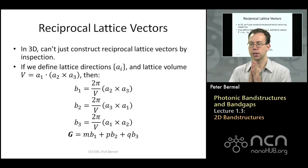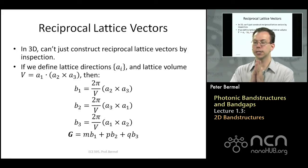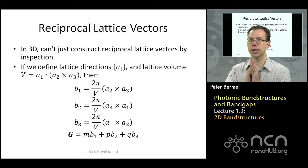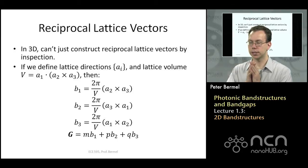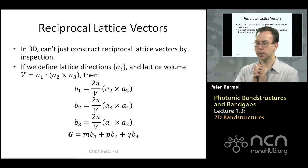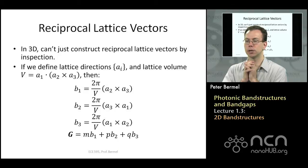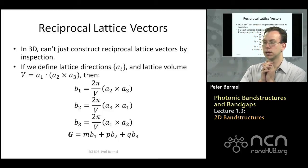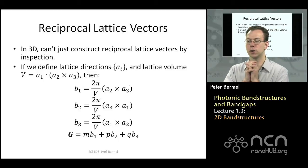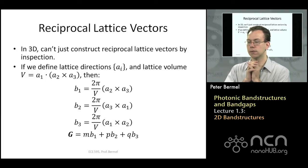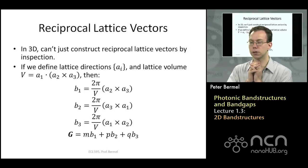In 3D, we can't always just guess what the reciprocal lattice vectors will be, so we have a set of relationships to construct them from the lattice directions. We write down the 3 key lattice directions in real space — a1, a2, a3 — and define the lattice volume as the triple product a1 · (a2 × a3). That allows us to derive the 3 reciprocal directions b1, b2, b3, which in turn give rise to the overall set of reciprocal lattice vectors as linear sums of integer multiples of those 3 quantities.